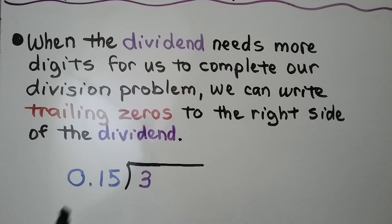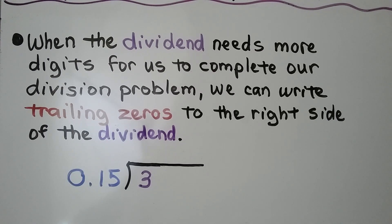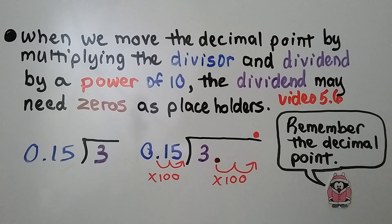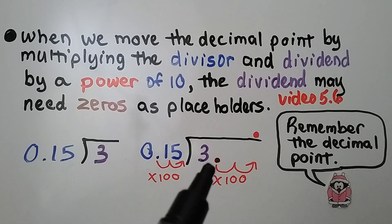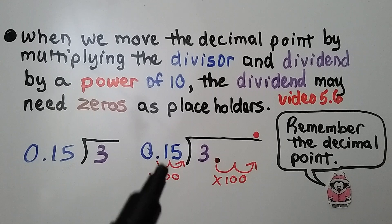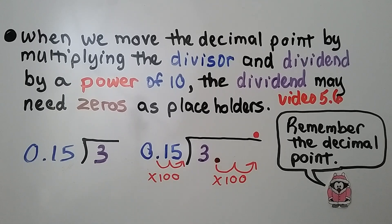We learned in the last video that when we have a divisor that's a decimal, we can multiply it by a power of 10 to move the decimal point to the right to make the divisor a whole number. When we move the decimal point by multiplying the divisor and dividend by a power of 10, the dividend may need zeros as placeholders. We multiply the divisor and the dividend by 100 to move this decimal point two hops to the right so the divisor is a whole number. Now we need zeros as placeholders here.